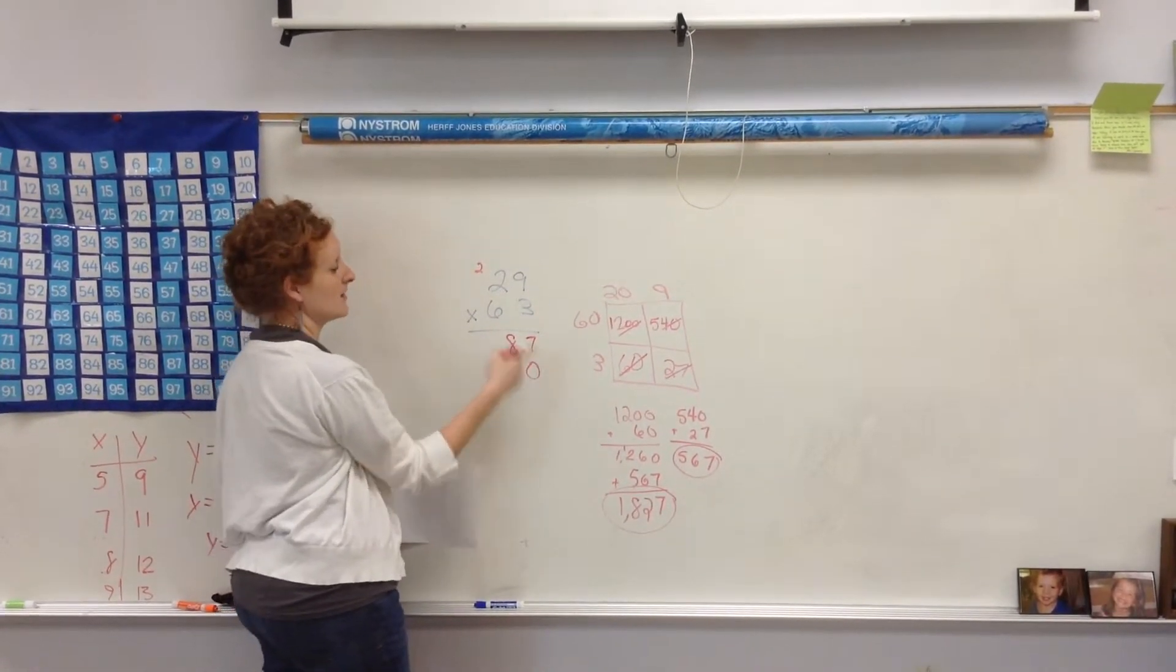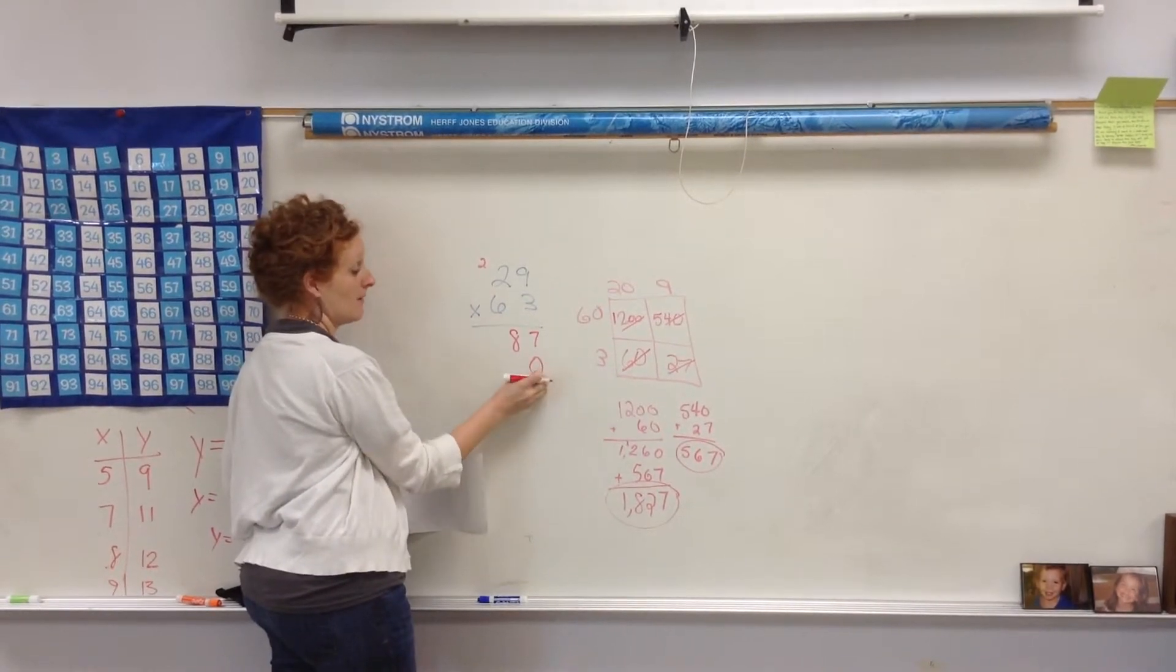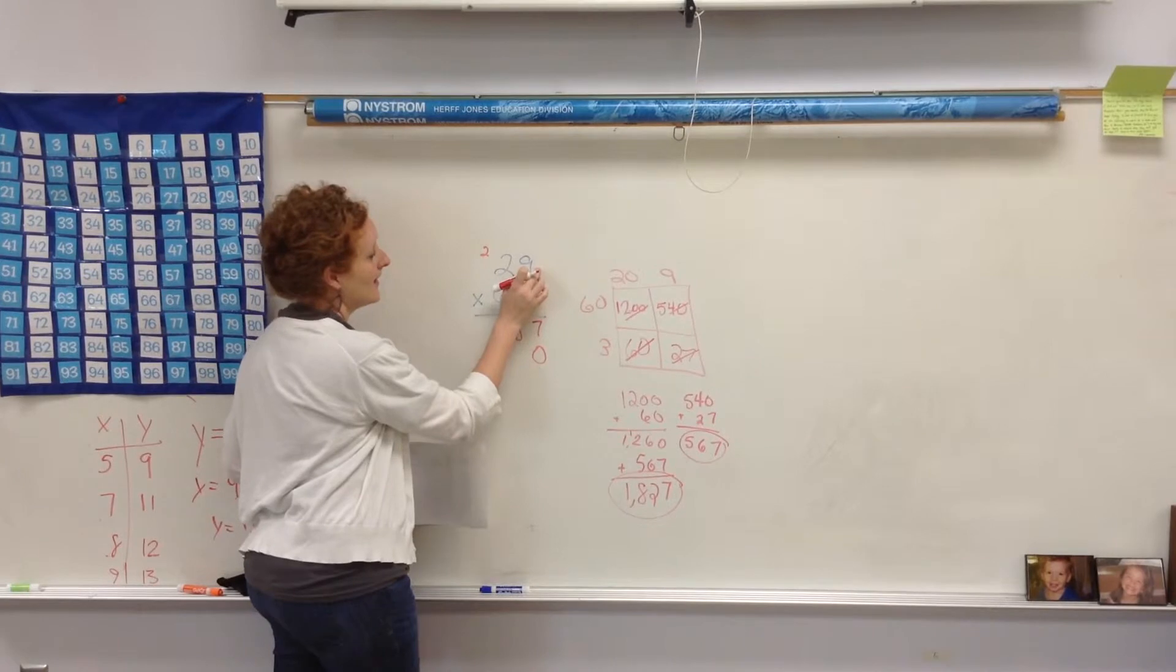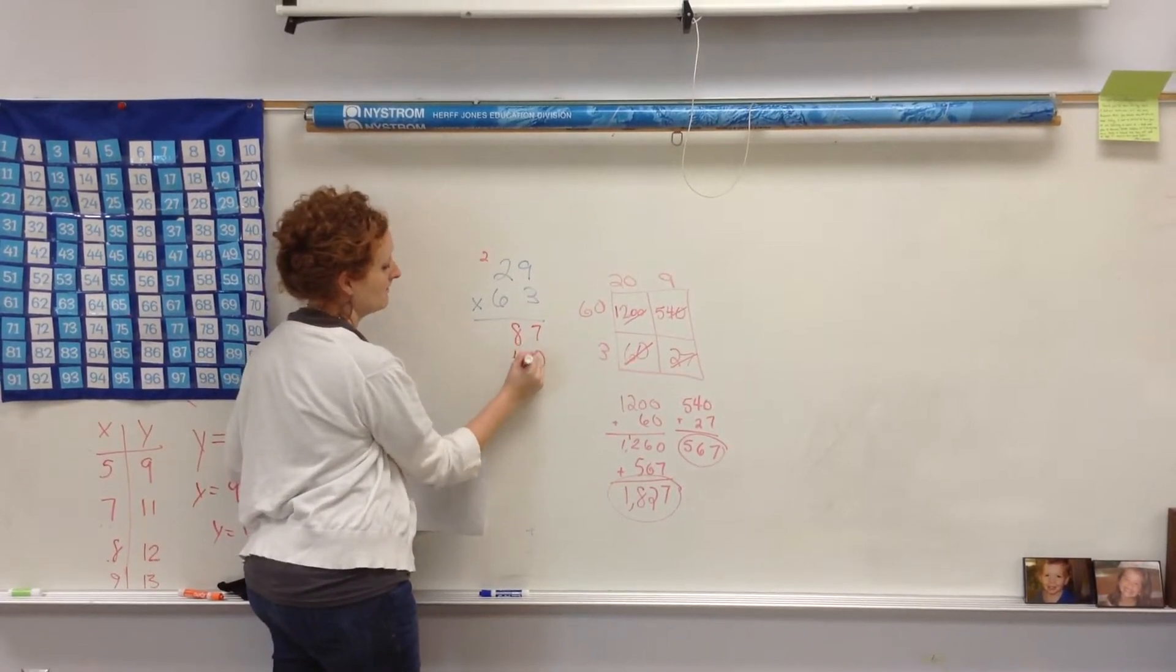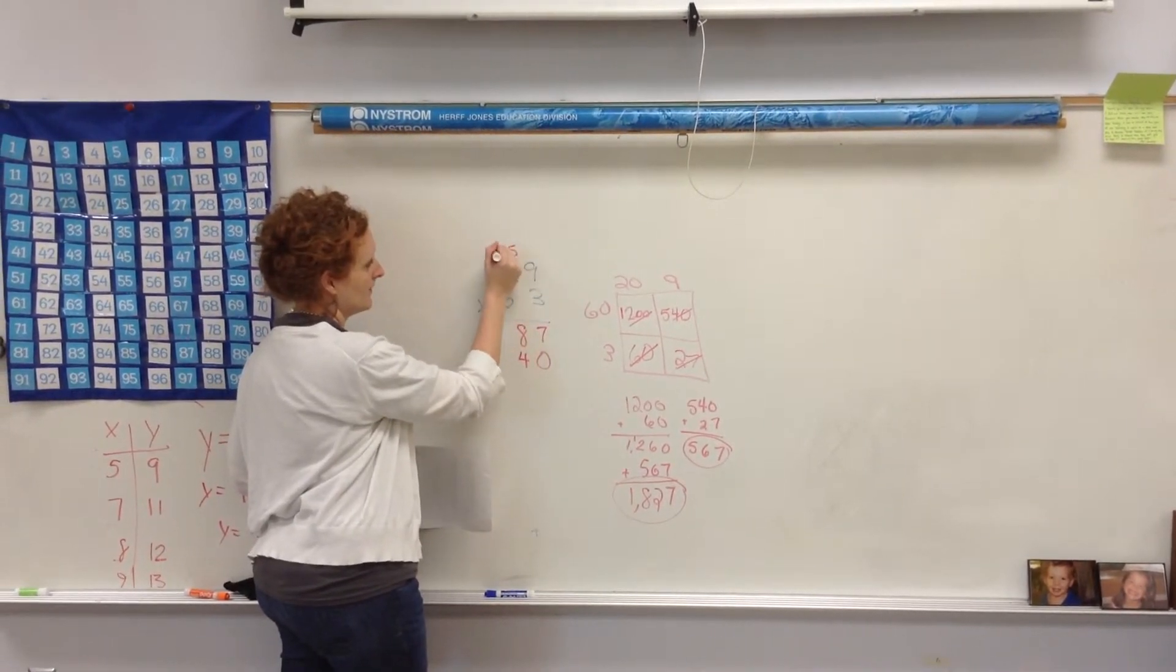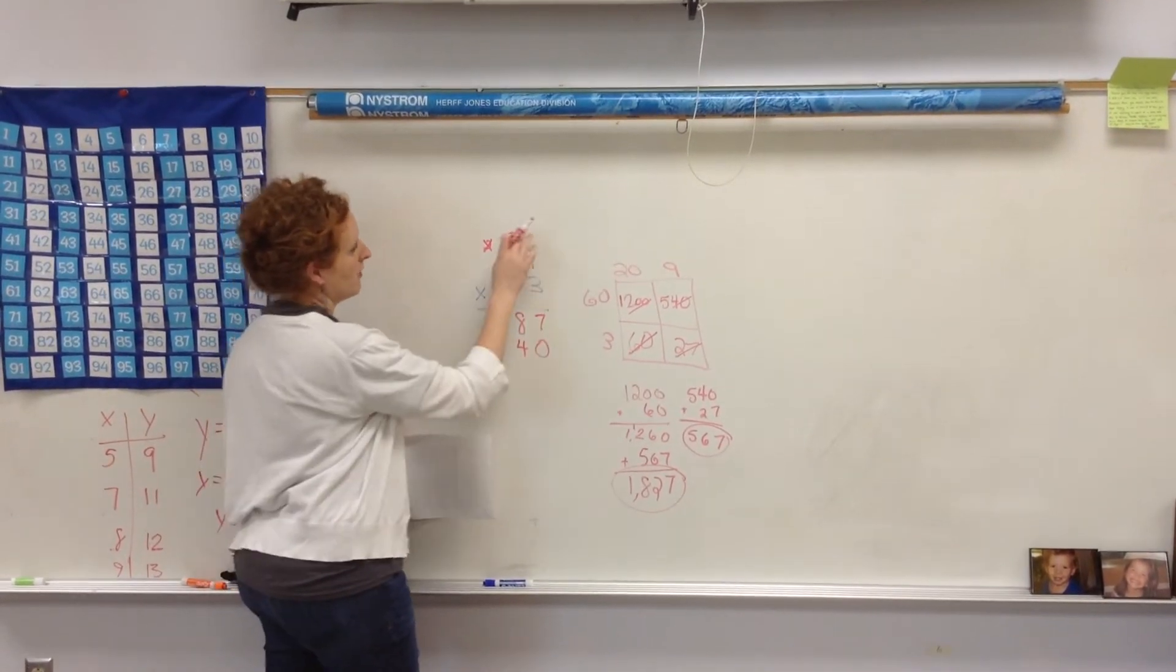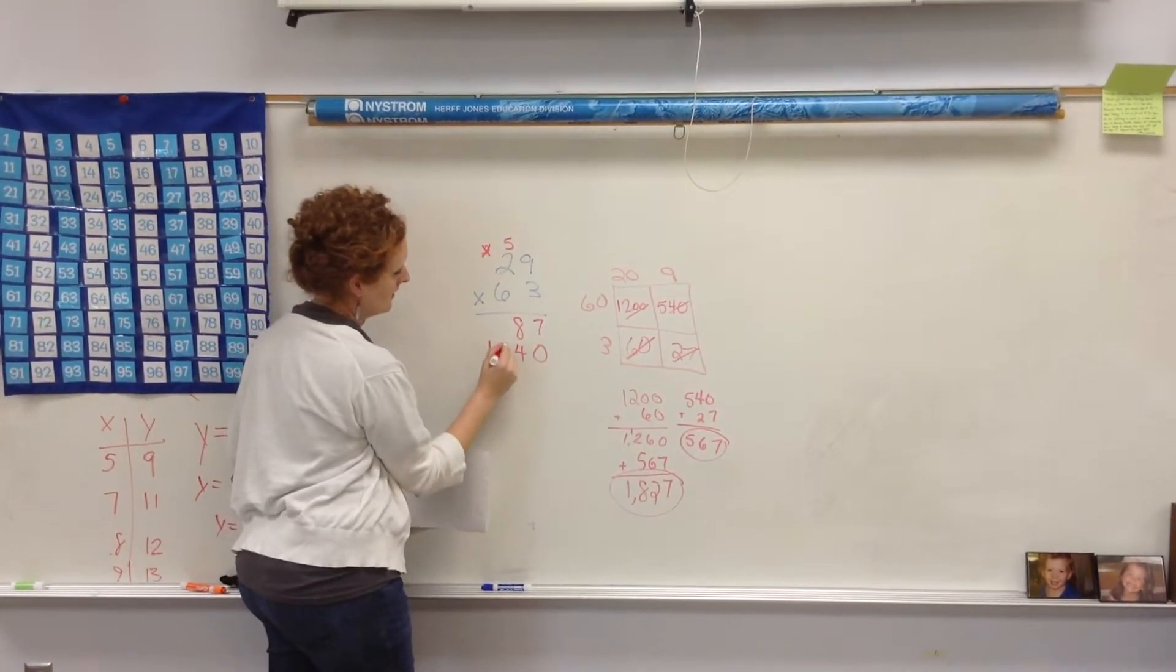Now, I'm going to come down to bring a zero because I'm going over to the tens place since I'm holding that place value so that I'm in tens. 6 times 9 is 54.